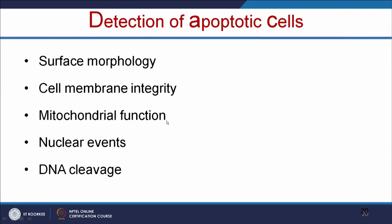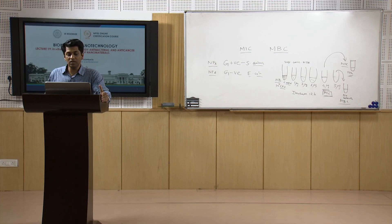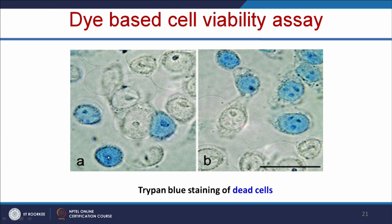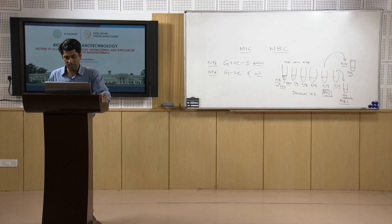Various methodologies are available to study apoptotic cells. The first is simple dye-based cell viability assay using trypan blue. This dye stains only dead cells—viable cells exclude the dye (dye exclusion method). Only dead cells with lost membrane integrity uptake the dye and appear blue. By counting blue cells, we calculate the number of dead cells. When cells are treated with different nanoparticle concentrations, we can count the dead cells. Cell lines can be obtained from NCCS Pune (National Centre for Cell Science).